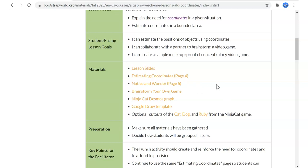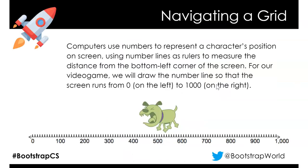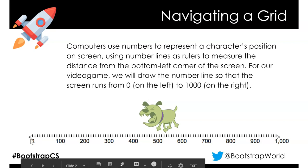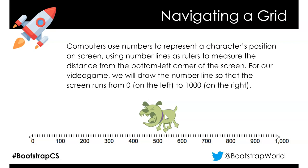We talked a little bit last time about the things that change in the Ninja Cat game, and one of those is the position of the images on the screen. Computers use numbers to represent the character's position according to a number line. In this example we have zero on the far left, 1,000 on the far right, and the center of this dog is at maybe 540 or so.